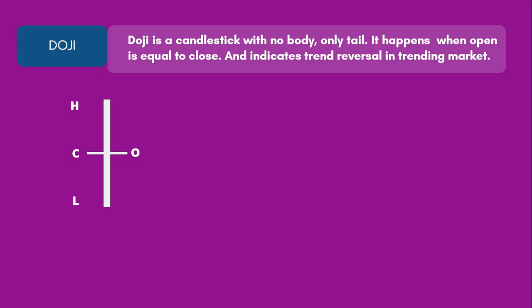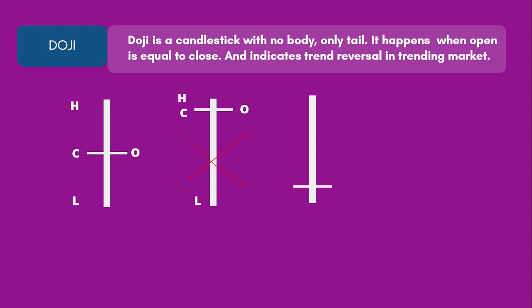For a Doji to be established, the upper and lower tail should be almost equal so it looks like a plus sign and not a cross sign. However, sometimes a candle forms where the upper tail is very small and the lower tail is very big — this is not called a Doji, this is called a Dragonfly. Similarly, if you have a small lower tail and a very big upper tail, that is also not a Doji. Only a neutral candle that looks like a plus sign is a Doji.